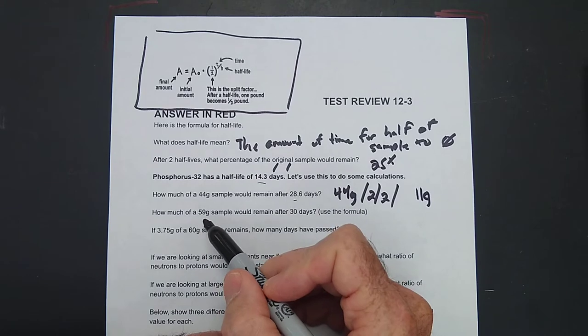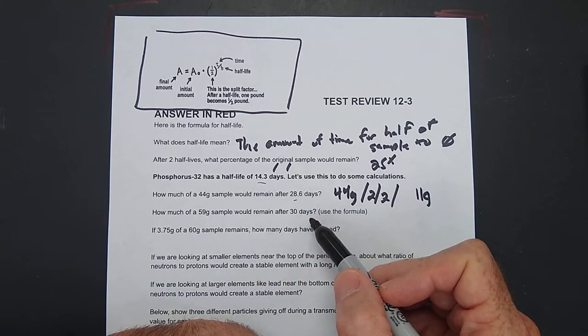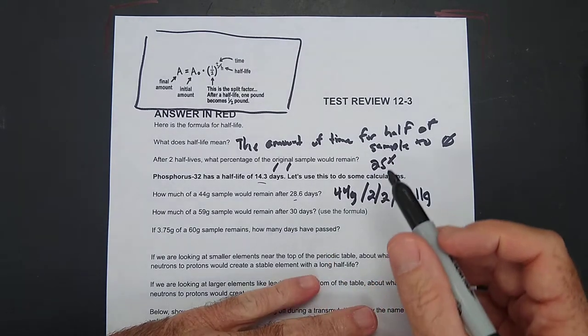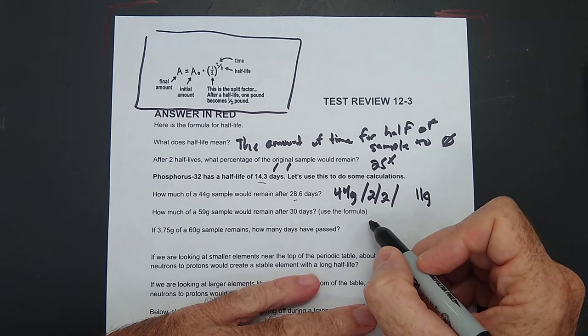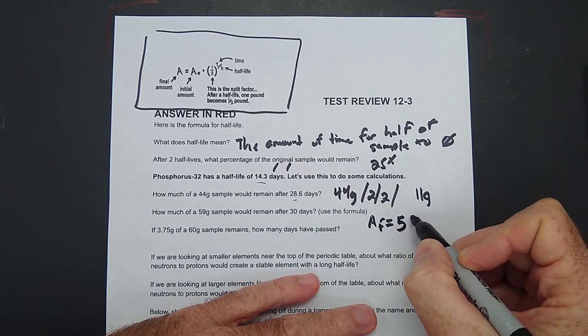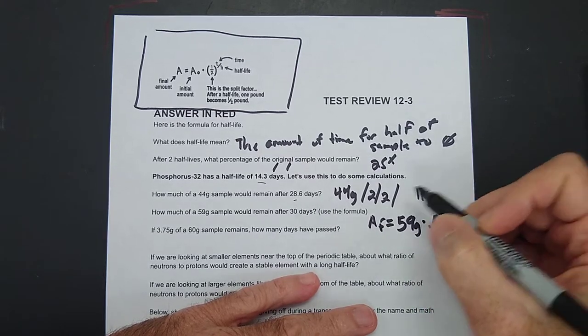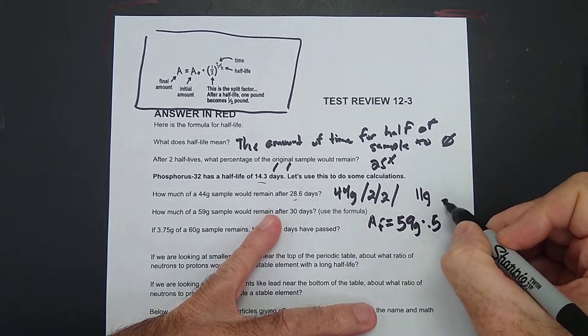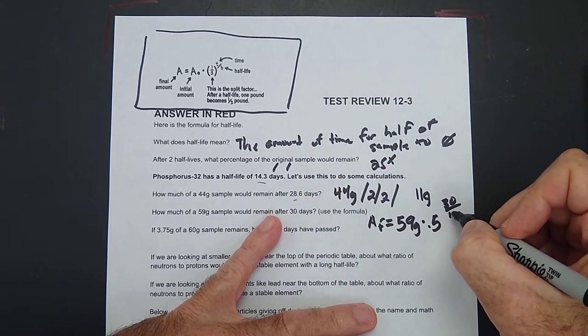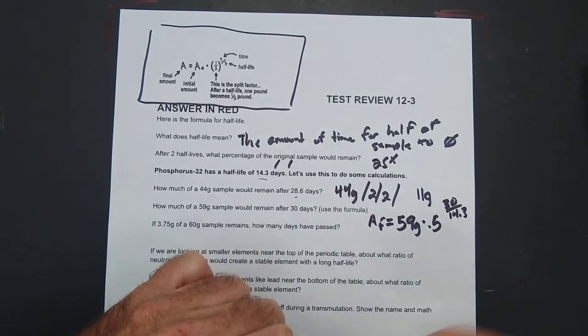How much of a 58-gram sample would remain after 30 days? Okay, and look, use the formula. So here's the formula. Amount left will be equal to 59 grams times 0.5 to the 30 over 14.3. And we can do that on our calculator.